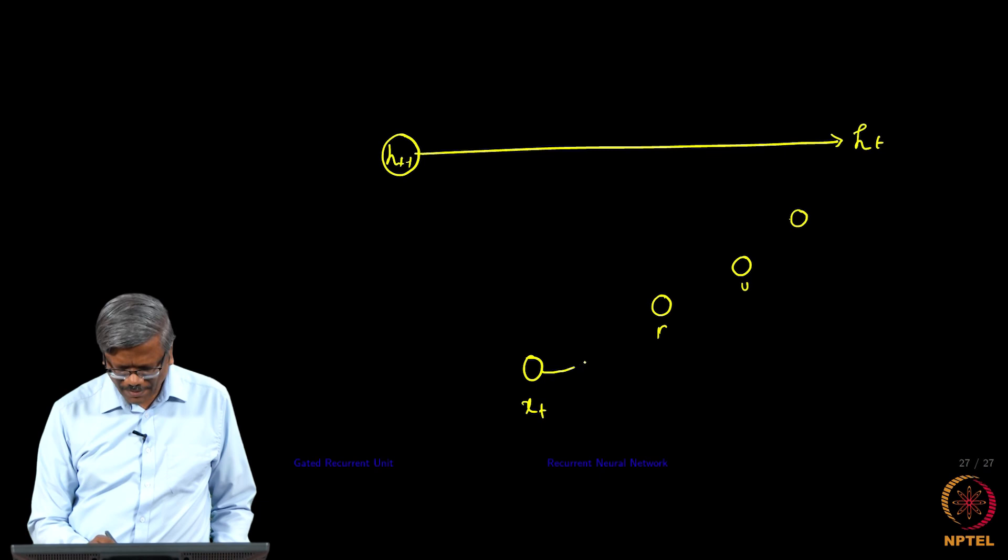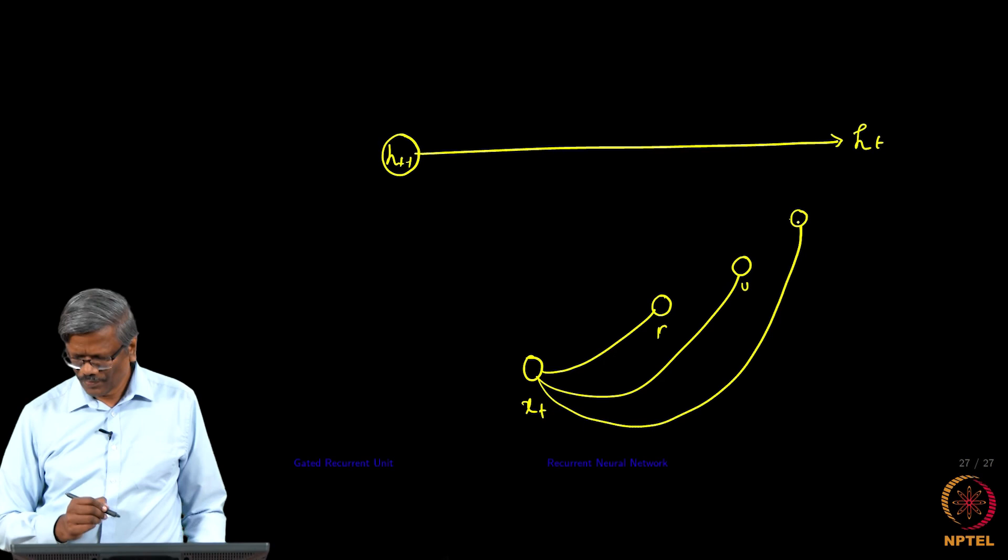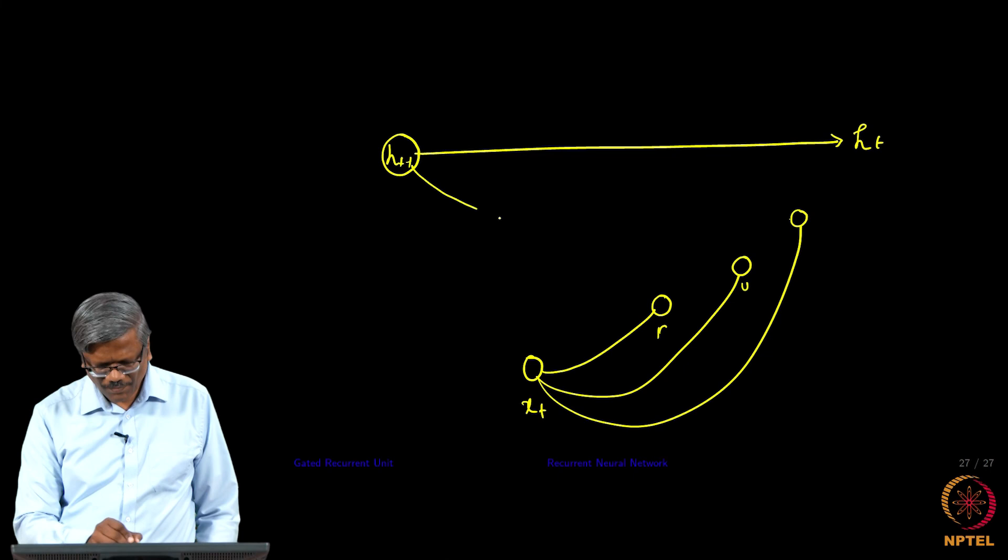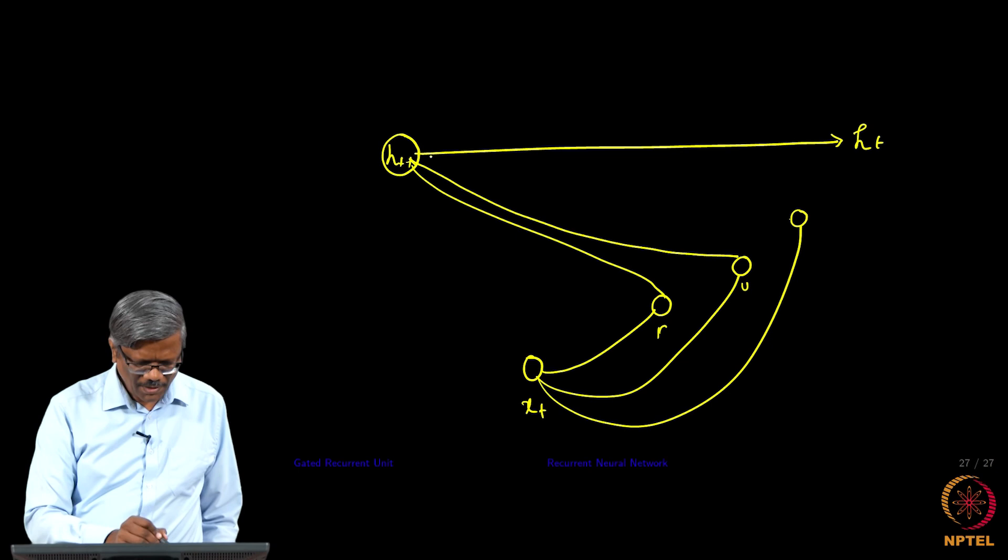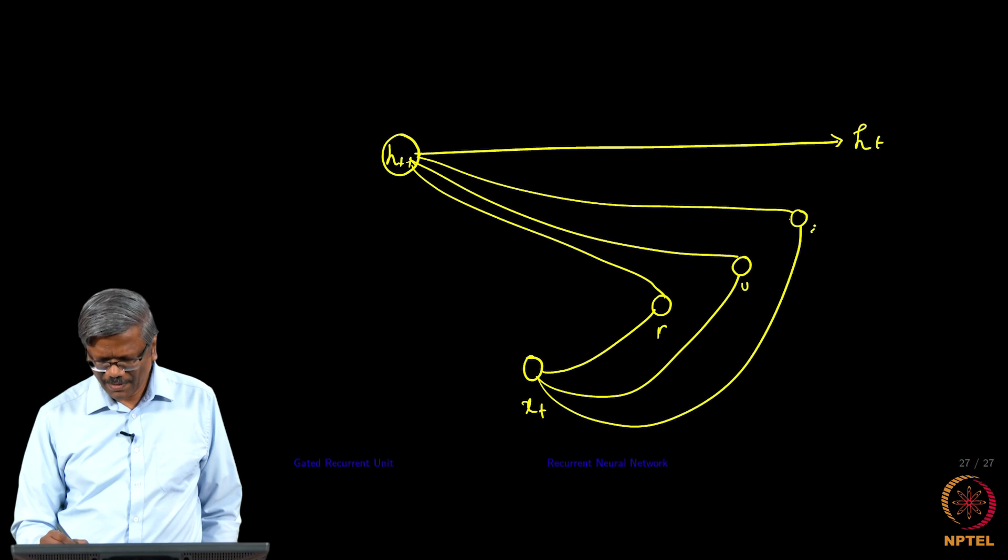x_t connects to all of these units, and then h_t connects to the reset gate, h_t connects to U, h_t connects to the new memory.